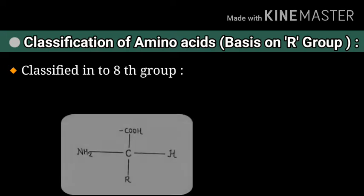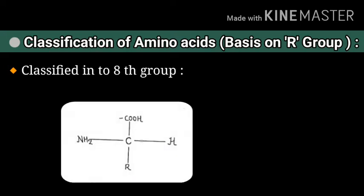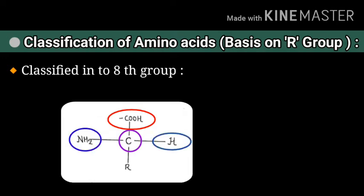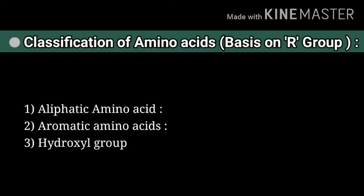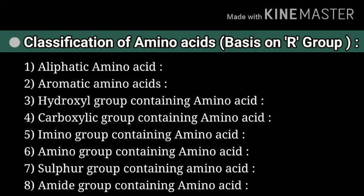You already know about the structure of amino acids. Here you can see the middle carbon, also called chiral carbon, has four groups: first, carboxyl group (COOH); second, amino group (NH2); third, hydrogen (H); and fourth, the R group, also called the side chain. On the basis of this R group, amino acids are classified into eight groups: aliphatic, aromatic, hydroxyl group containing, carboxylic group containing, amino group containing, amino group containing, sulfur group containing, and amide group containing.